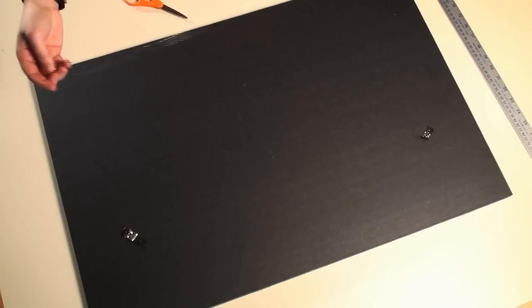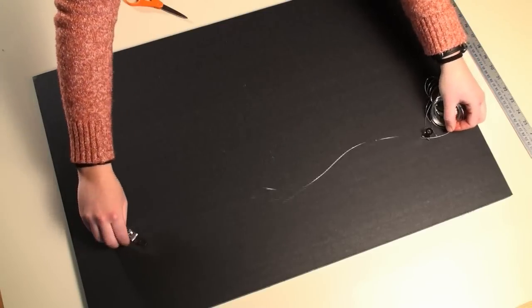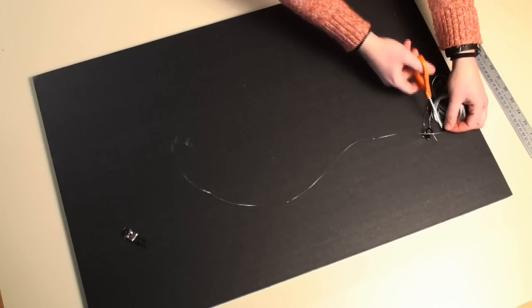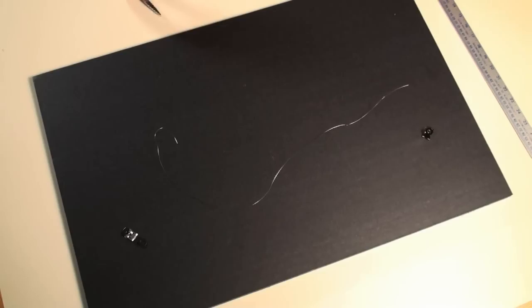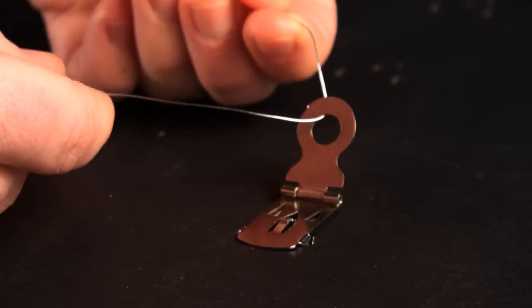The next step is to string some metal hanging wire between the two loops. Measure out your length and cut with scissors. Then insert one edge of the wire through the loop and wrap it around itself to secure.